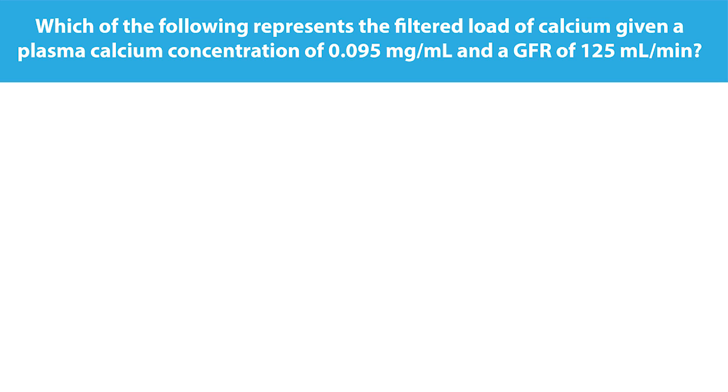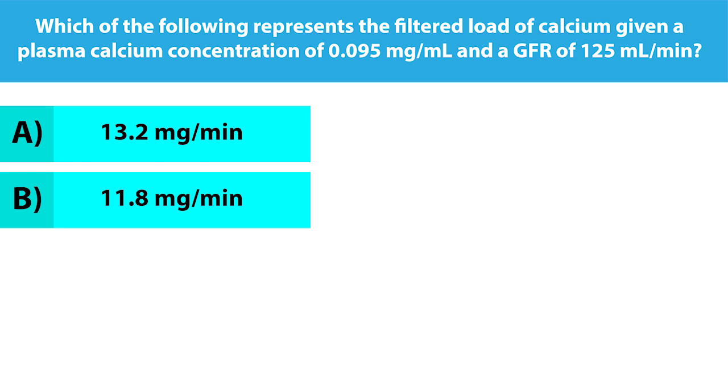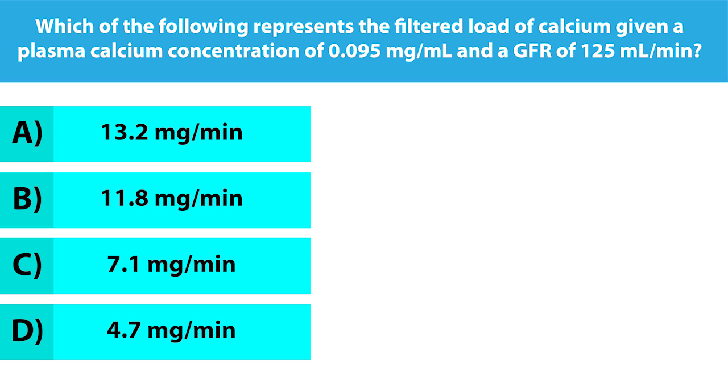Your options are A: 13.2 milligrams per minute, B: 11.8 milligrams per minute, C: 7.1 milligrams per minute, and D: 4.7 milligrams per minute. Pause the video to make a guess.